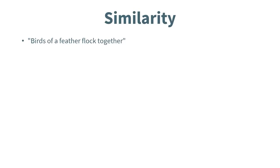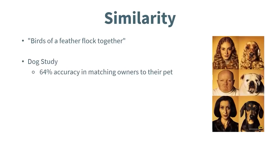Let's talk about another major factor in predicting attraction, which is similarity. There's often debate about whether opposites attract, but more consistently, research suggests people are more attracted to others similar to them. A fun example is a dog study where researchers found that 64% of the time — higher than chance — random strangers were able to match owners with their dogs from pictures, suggesting people may be attracted to pets that appear similar to themselves.